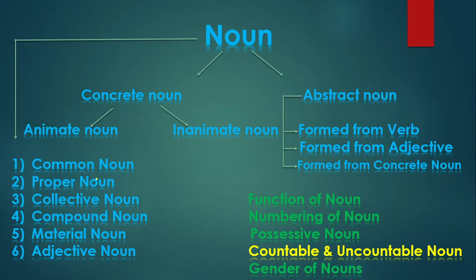We have already discussed the kinds of nouns — concrete and abstract. Topic one we already discussed, the second was numbering of nouns, the third was possessive nouns, and today we have the fourth topic: countable and uncountable nouns.